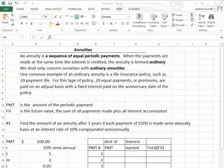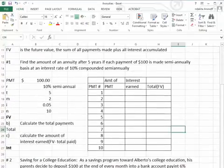One example of an ordinary annuity is paying premiums into a life insurance policy. So if we have a 20 payment life insurance policy, we put in 20 equal payments or premiums. The two formulas we're going to use is PMT, that's the amount of the periodic payment, and FV, which is the future value, and the future value is the total of all payments made, plus all the interest that is accumulated.